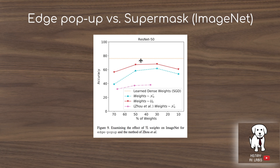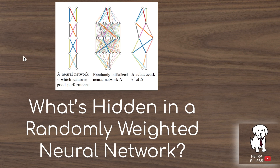In summary, this is a head-scratching result showing that even without optimizing the parameters of neural networks, you can find subnetworks within randomly initialized dense architectures that perform well and outperform shallower counterparts — such as the Wide ResNet-50 subnetwork versus the trained ResNet-34. Thanks for watching, and please subscribe to Henry AI Labs for more deep learning and AI videos.